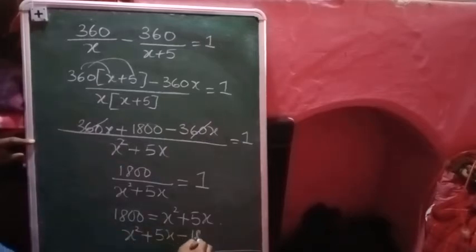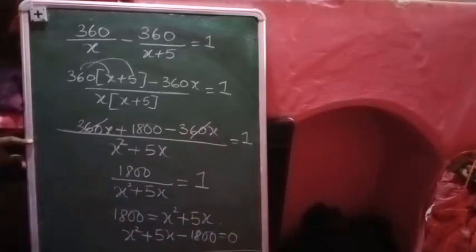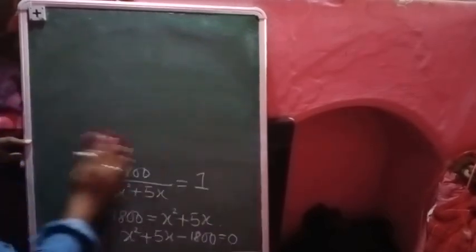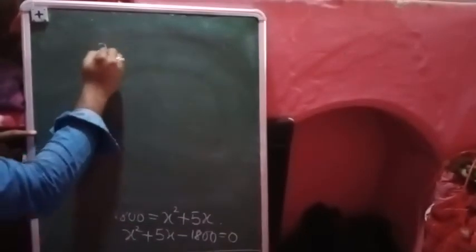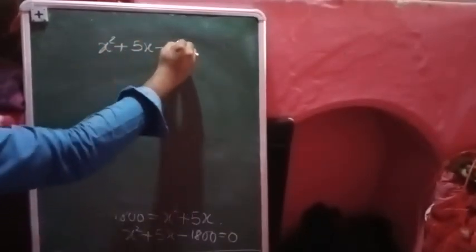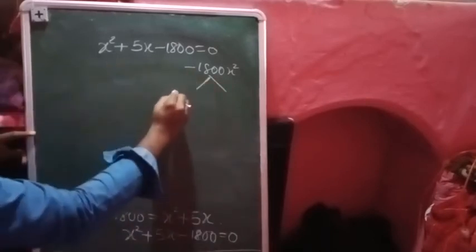Let us factorize by the method of factorization. We can factorize easily. Our equation is x square plus five x minus eighteen hundred, which equals to zero. For minus eighteen hundred factors, you should take such a way that the difference should be five.